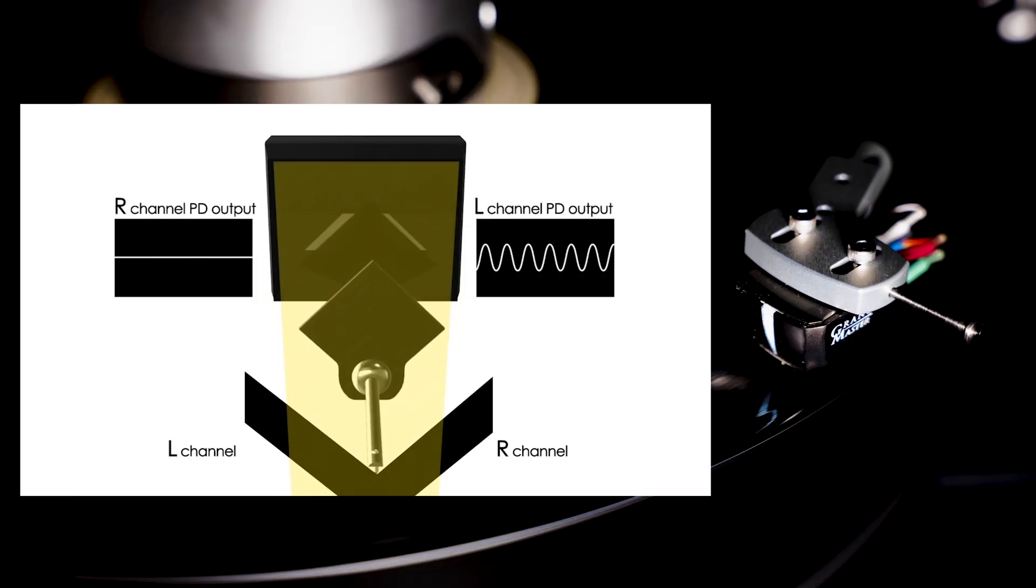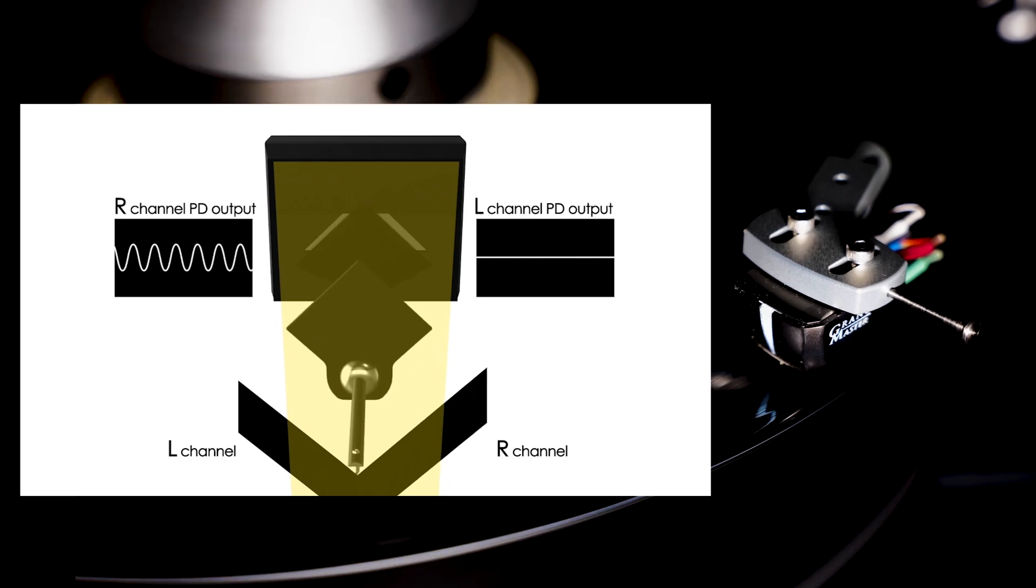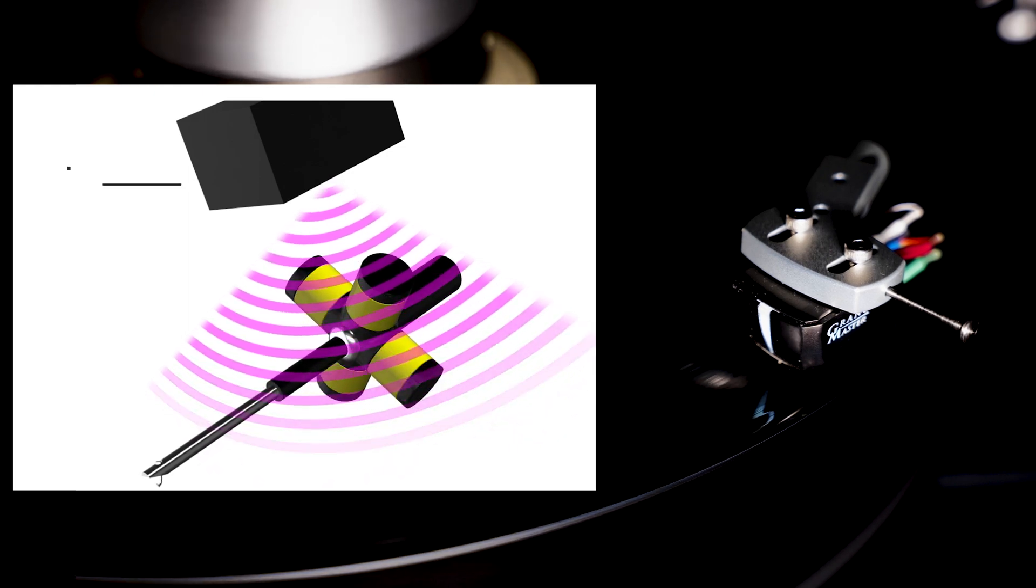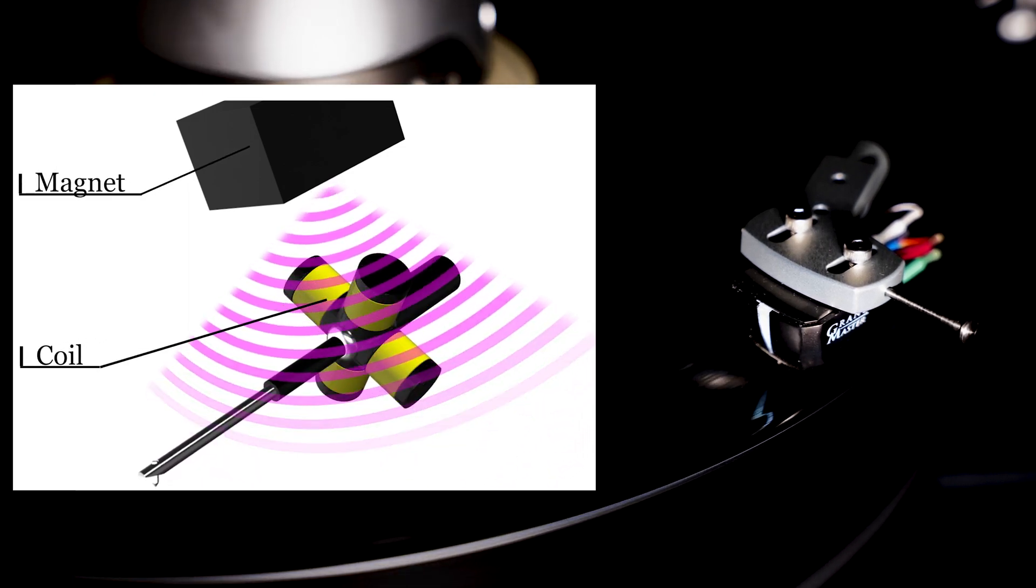Thus, the output of the optical cartridge is not digitally converted at all. It is a completely analog signal. For cartridges that use magnets and coils, there's always some magnetic resistance when they create a sound signal.